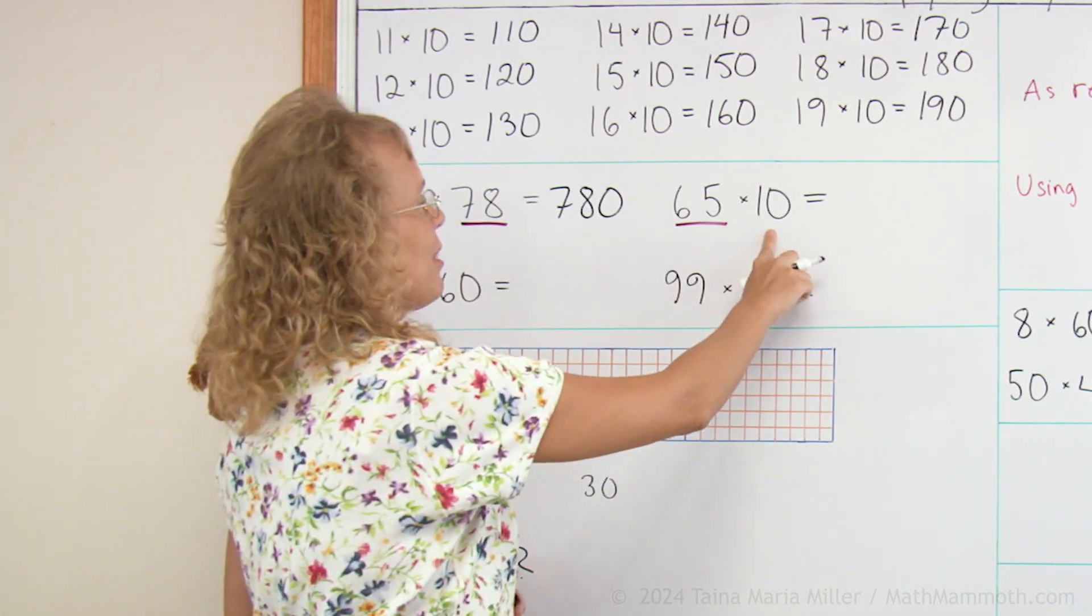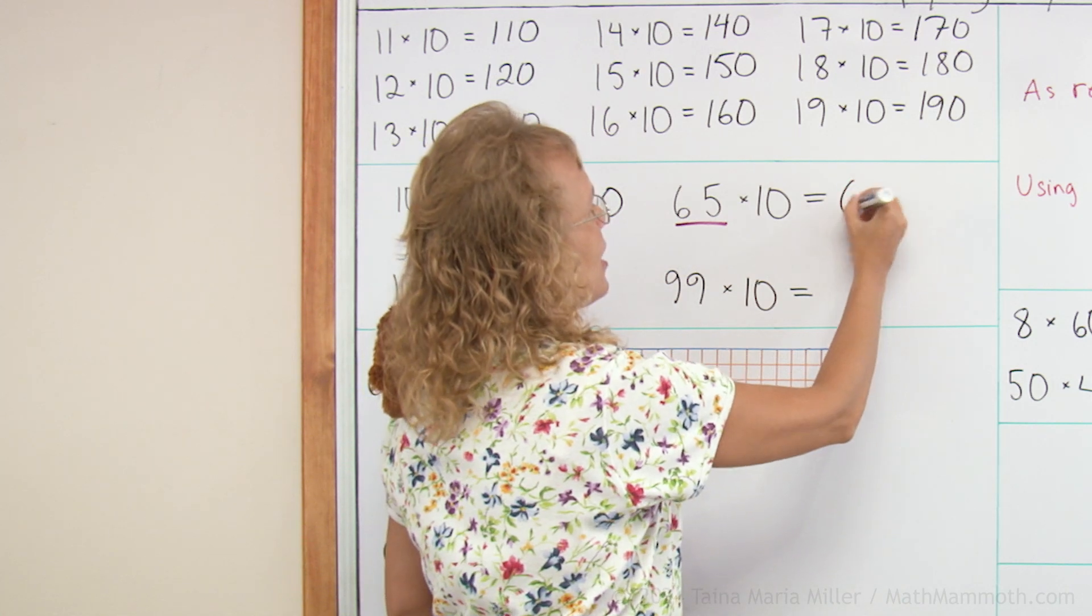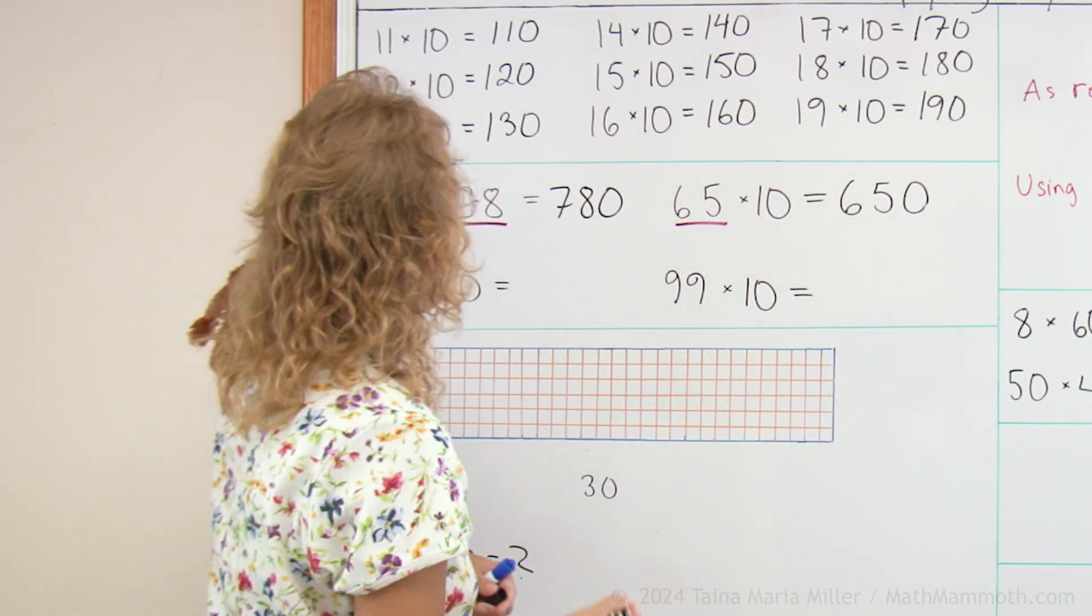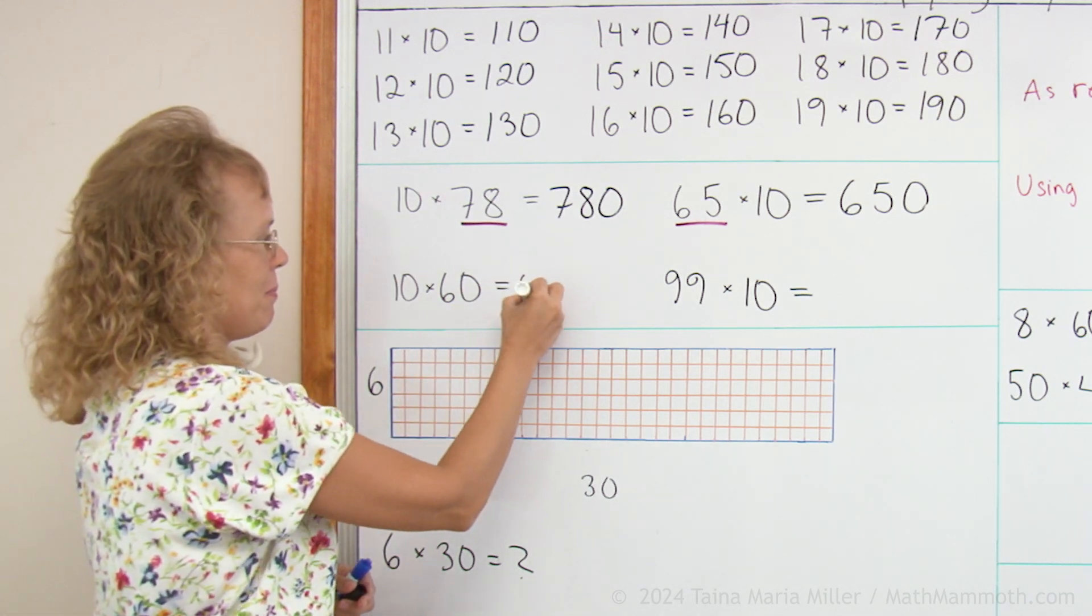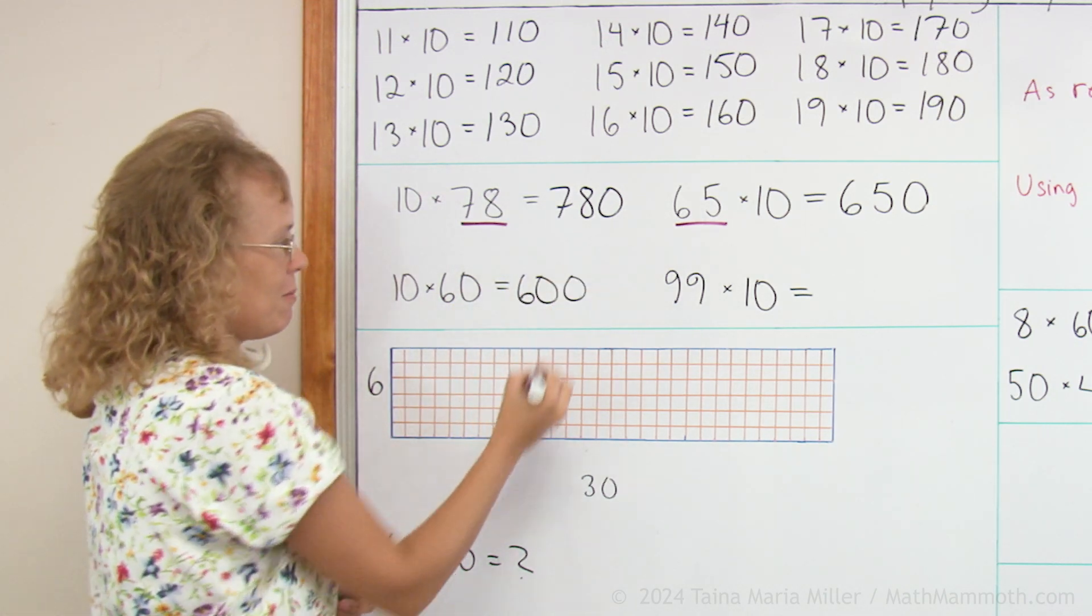65 times 10 is, write 65 and write a zero after it. 10 times 60. Write 60 and a zero. So we get 600.